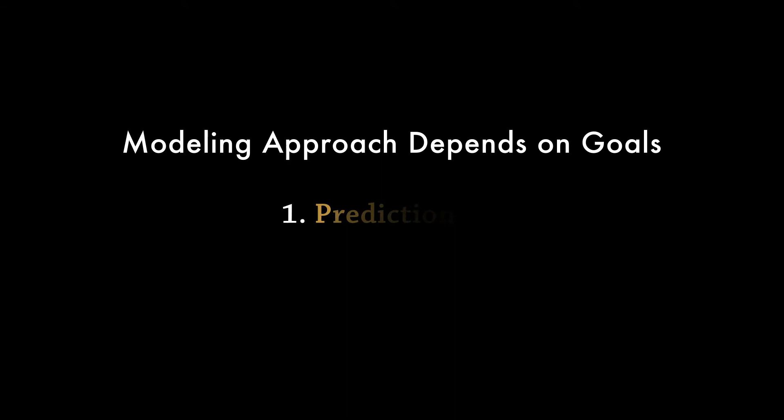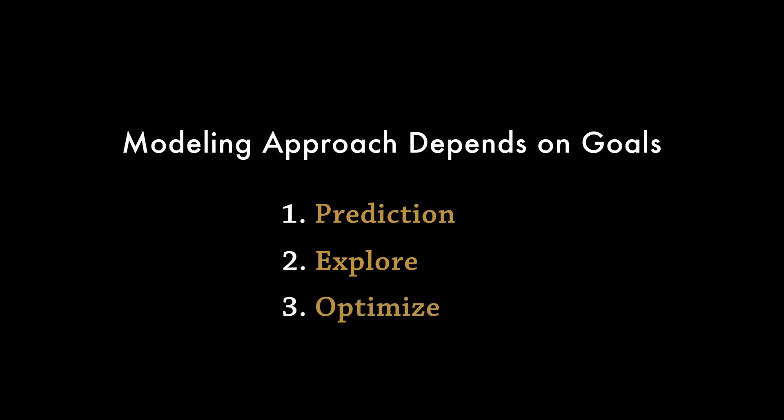Let me mention the four most common modeling goals and provide some specific examples. The first is for predicting — these kinds of modeling approaches are usually focused on the status of part of the system based on knowledge of other components. The second would be the goal to explore and understand the system, for example, for teaching or promoting social learning among stakeholders. A third broad category of goals is to optimize a decision, for example, how to design a proposed policy. And then a fourth is to envision a future, often called scenario modeling.